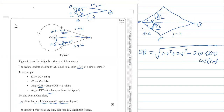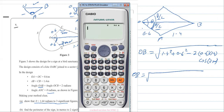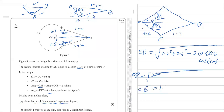Using the cosine rule with the triangle OAB, OB equals the square root of 1.4 squared plus 0.6 squared minus 2 times 1.4 times 0.6 times cosine of 2 radians. Calculating this gives OB equal to 1.737 meters.